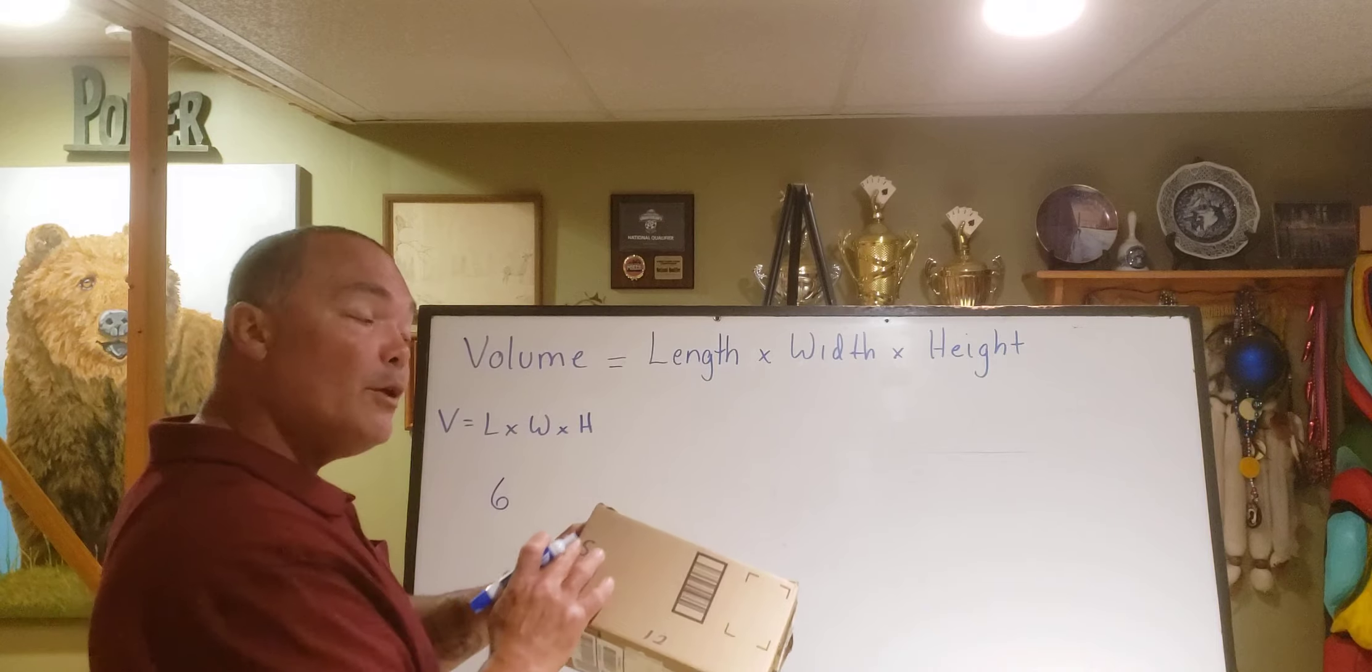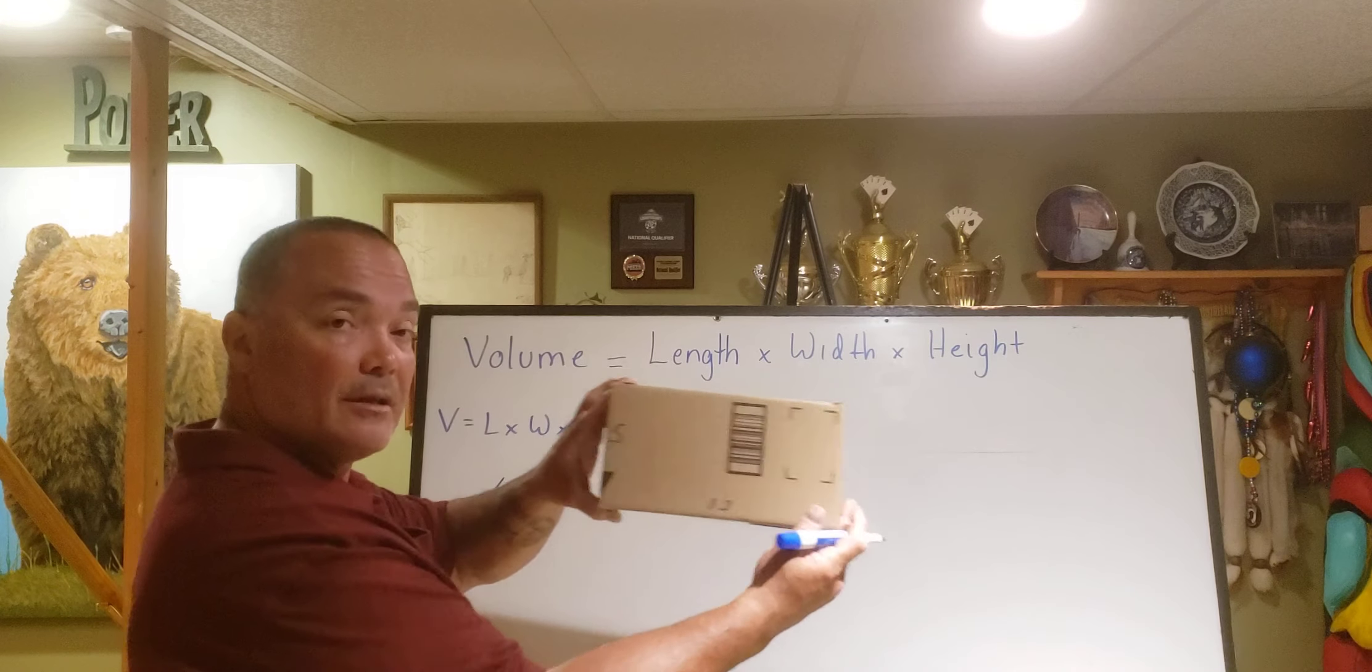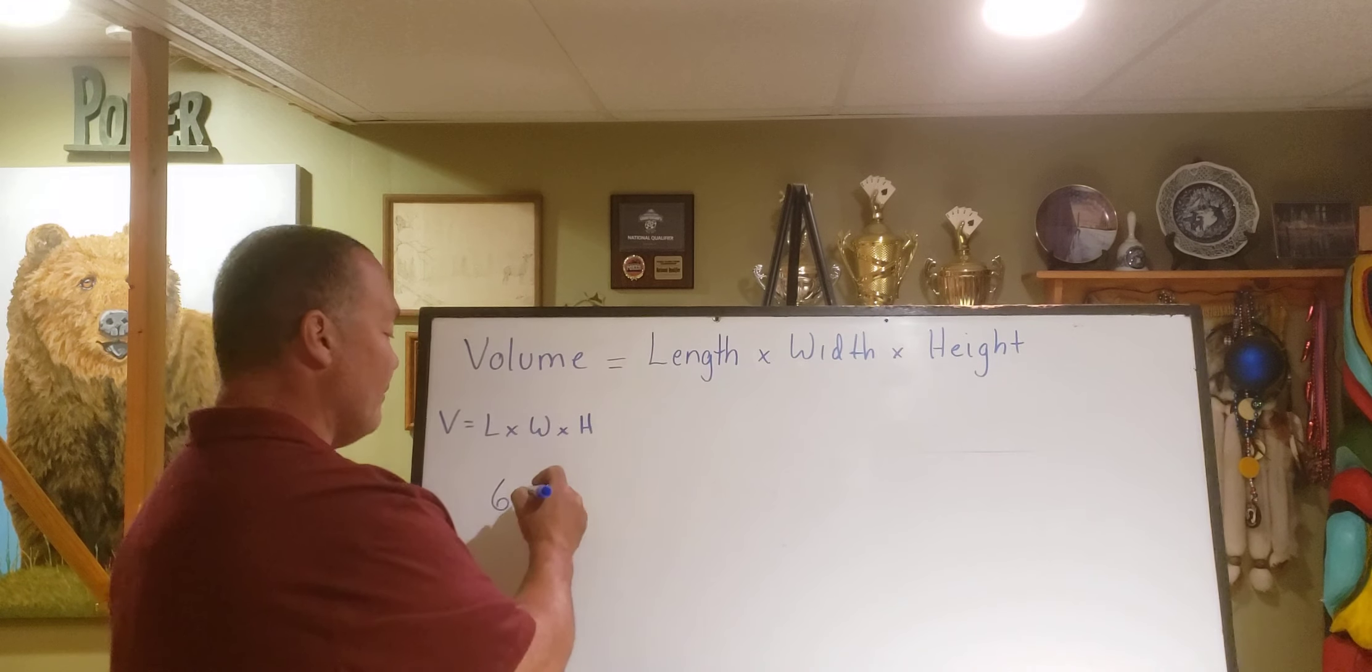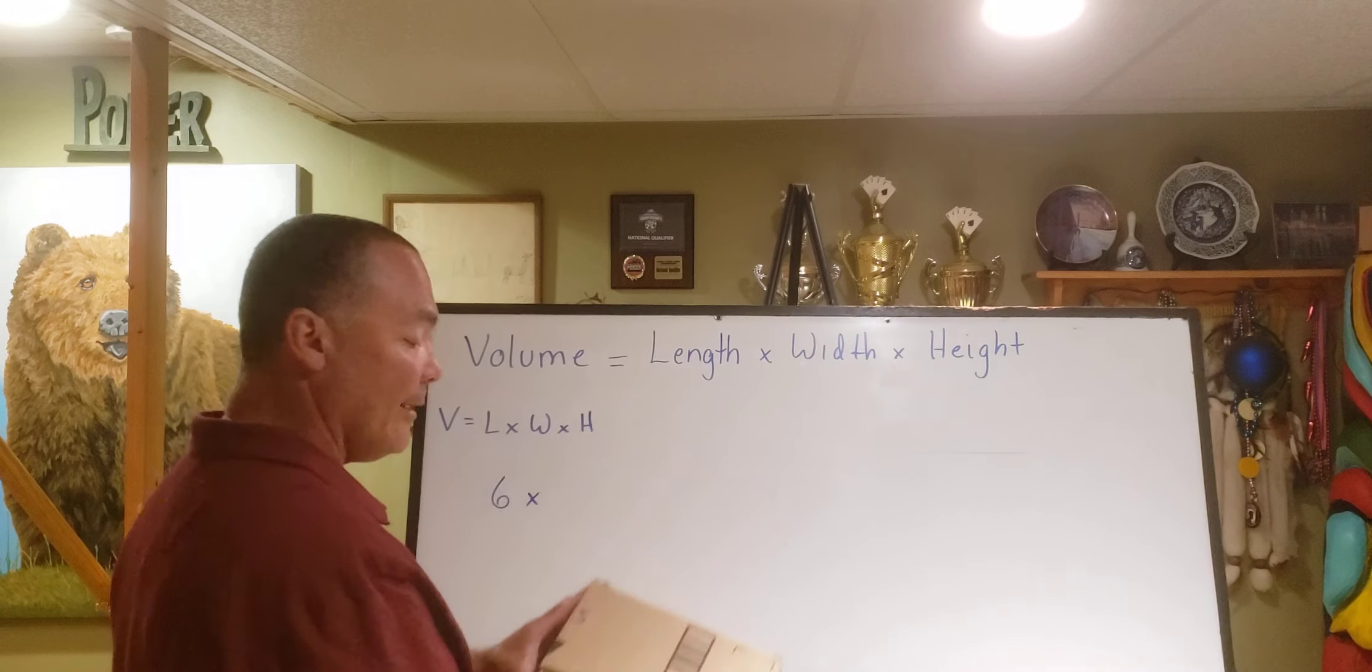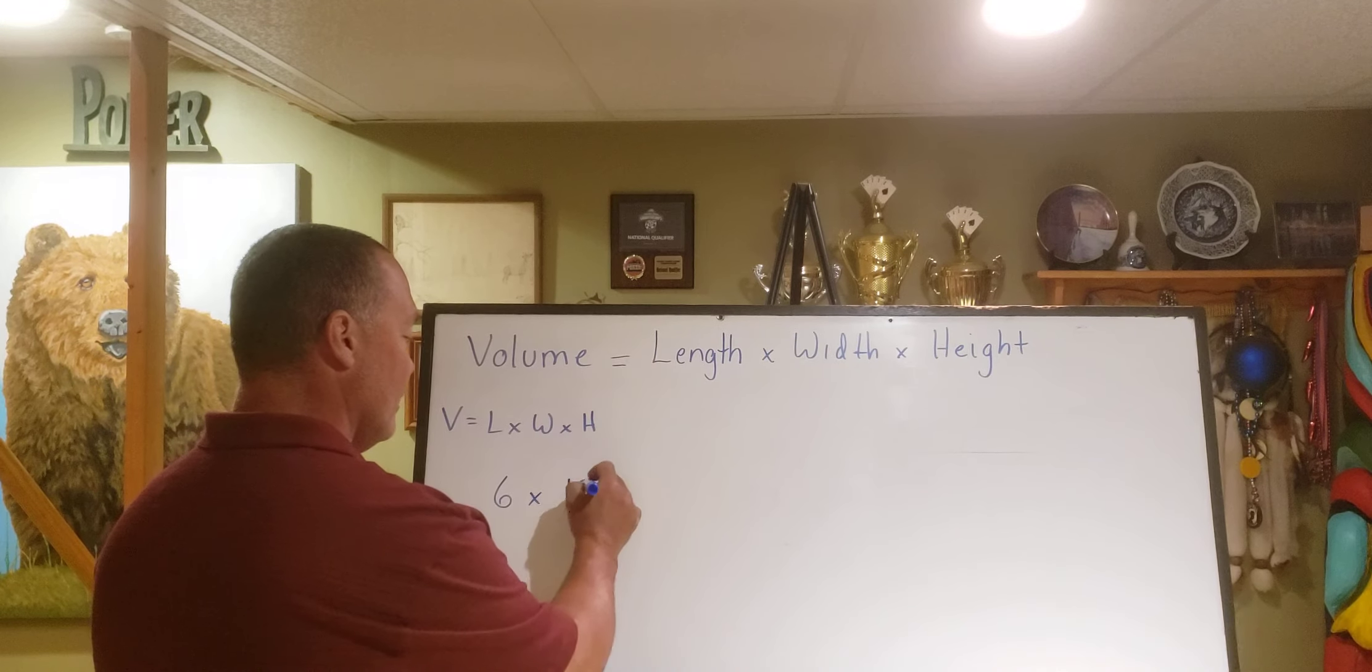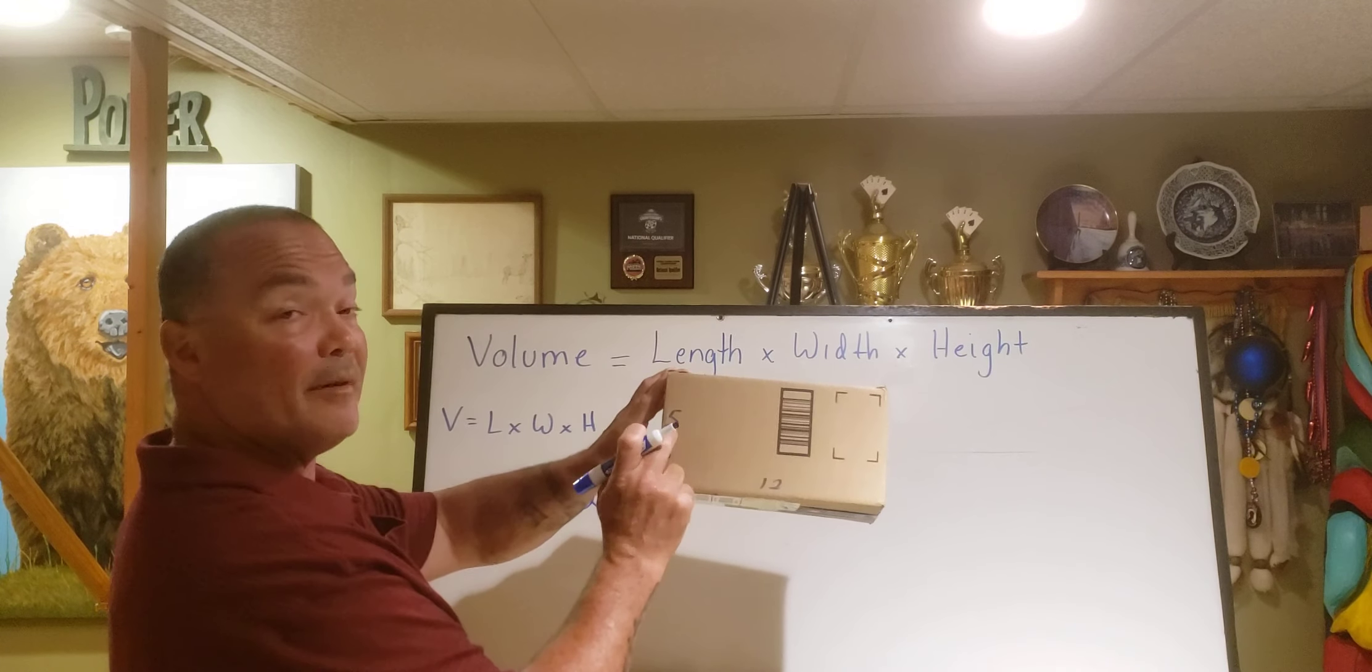And in this case we're using inches, right? We wouldn't use feet or yards or miles because this object is too small. So my length is six, that's my L. I'm going to multiply it by my width. We said my width here is twelve, and then my height, my up and down, is going to be five.